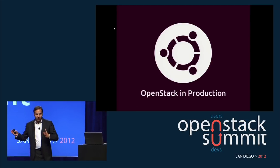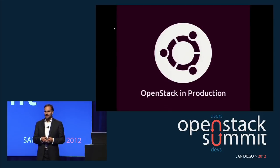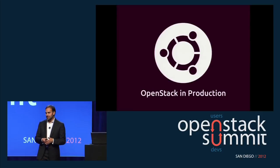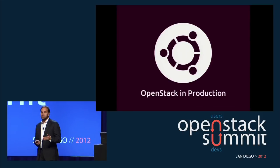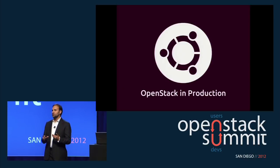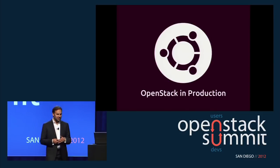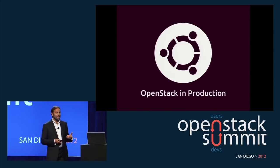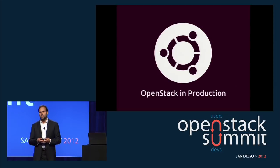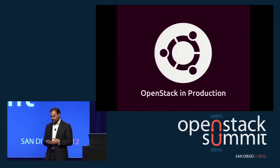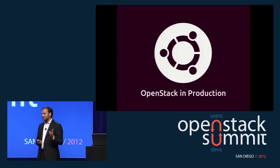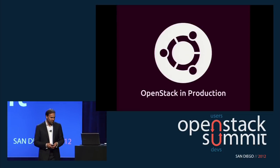Six months ago I did some magic on stage at the design summit, bringing up from scratch, from bare metal, a full OpenStack cloud in 18 minutes. I say magic not because there was any trickery, but because the tool we used is called Juju. Just like Ubuntu means people, Juju means magic. Today I'd like to do something perhaps a little more daunting, to show you what's been achieved in the OpenStack community in the last six months. My theme for this talk is OpenStack in production.